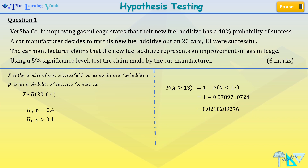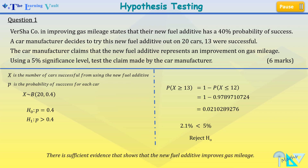This in percentage is less than our 5% significance level, which is what we've been told to carry out our test with. At this point we can see that we need to reject the null hypothesis. Don't forget to write your statement that there is sufficient evidence that shows that the new fuel additive improves gas mileage.